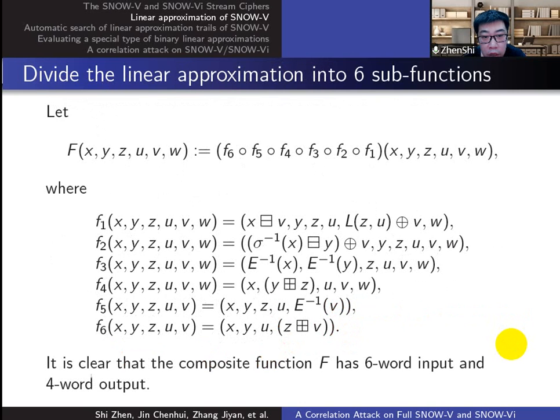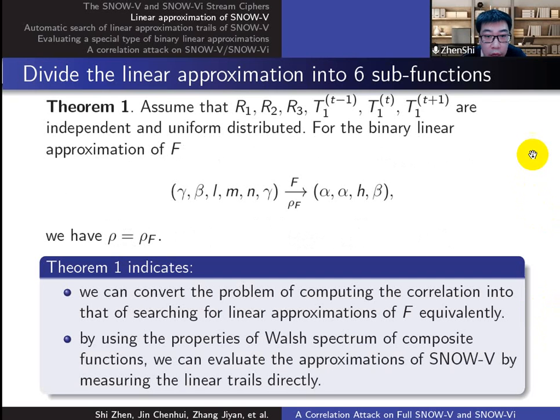We construct six sub-functions and their composite function f. Thus, we have theorem 1: the correlation of this linear approximation of the function f is equal to that of the distinguisher.